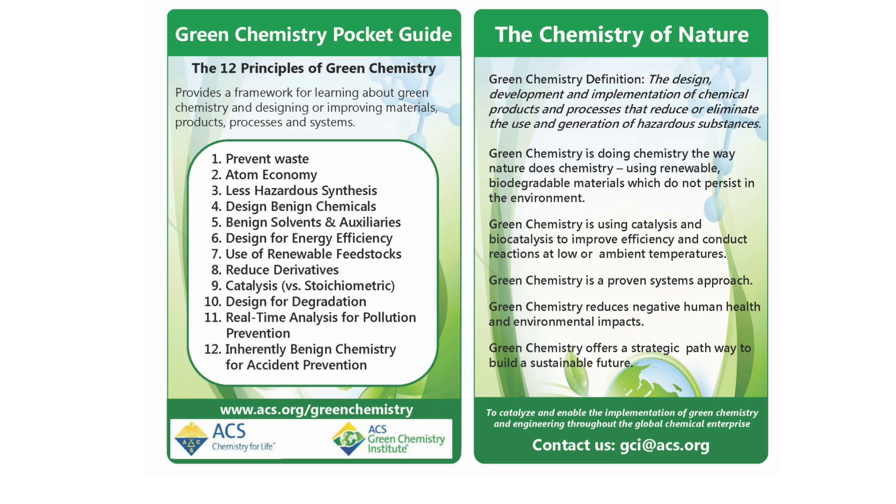So remember we have these 12 principles. In a previous video we talked about the atom economy, which we use the molar masses of the reactants and the products to get a sense of how many atoms of your reactants end up in your actual products. In this video we're going to talk about one of these ways that we can measure how much waste we're producing and that's the environmental factor, the e-factor. We're going to look at how many grams or kilograms of waste are we producing per every gram or kilogram of product that we actually make.